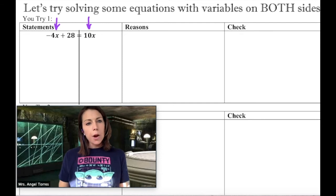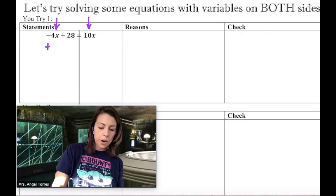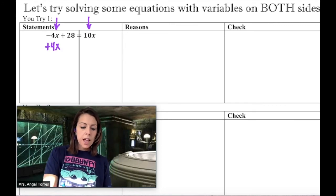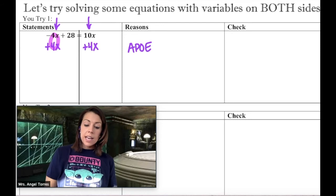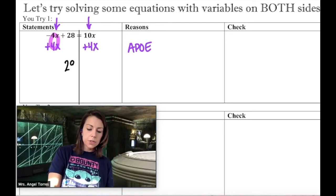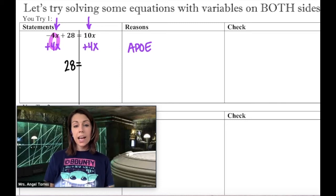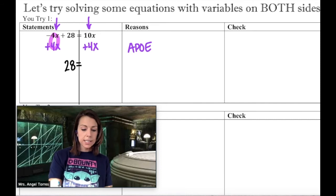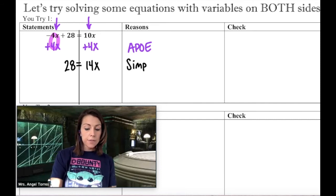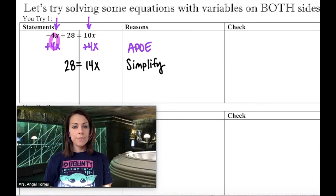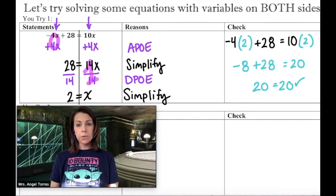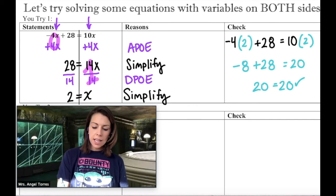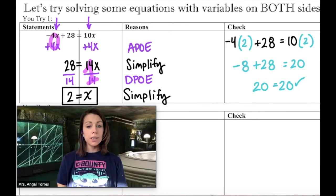How do I make a zero term out of negative 4x? I add 4x, because a negative and a positive gives zero. That creates a zero term, and by the addition property of equality I add 4x to the other side. The left side is down to the constant 28, and 10x plus 4x is 14x. Now it's a single term and a single term. Dividing both sides by 14 gives x equals 2. Checking it works out, so x equals 2 is the solution — it deserves the box.